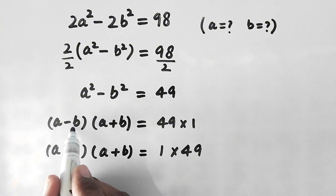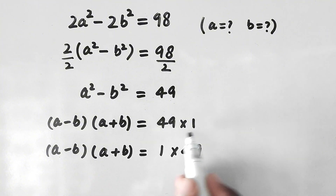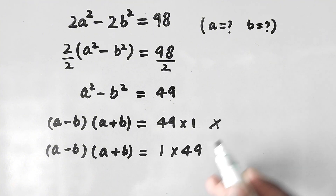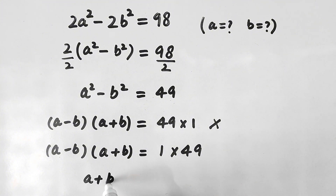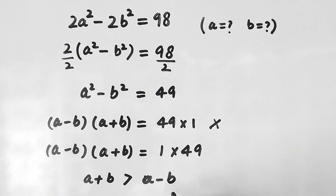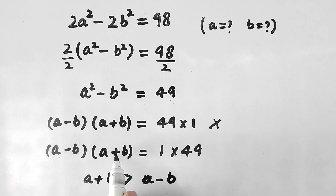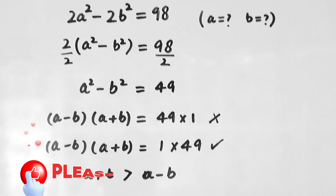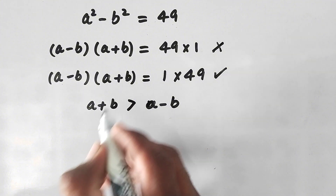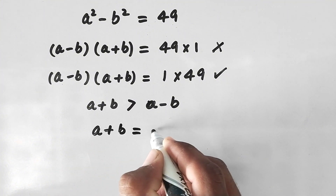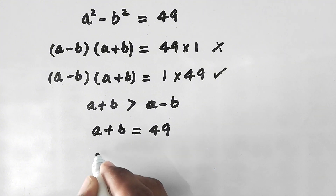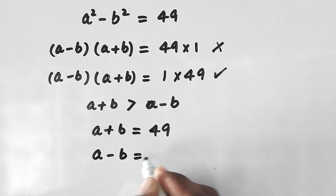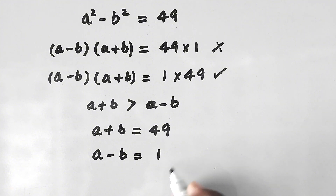If we compare (a minus b) to 49 and (a plus b) to 1, this will not work, because the sum of two values must be greater than their difference. So instead, we compare (a minus b) to 1 and (a plus b) to 49, and this equation works.